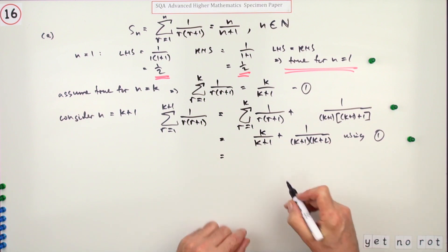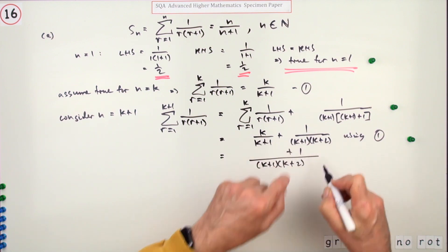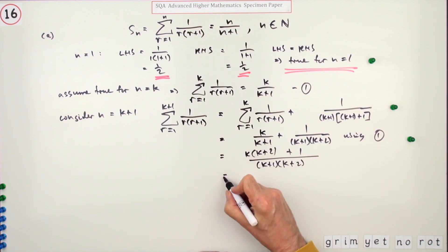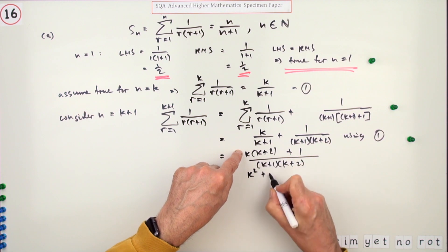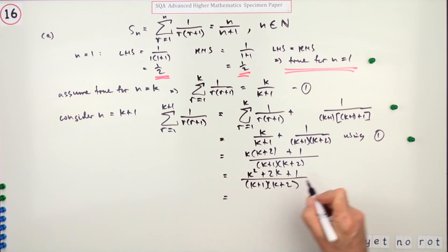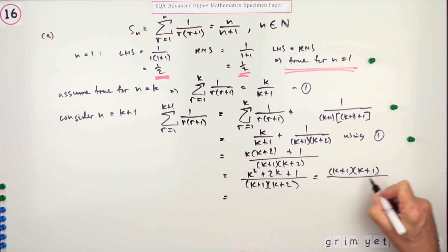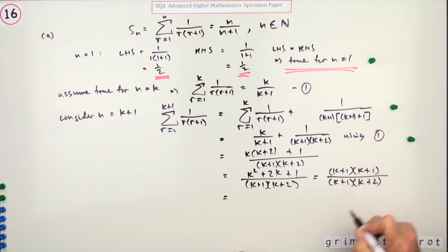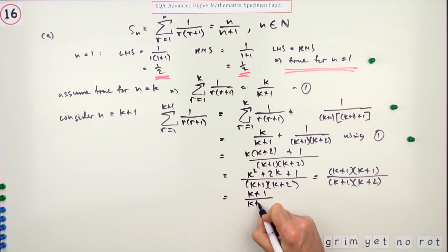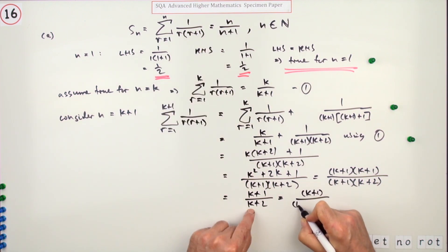The next mark doesn't come until you've tied it up. You've got two fractions to add: k over k+1 already has part of the denominator, so the second fraction needs multiplying to give k(k+1) over (k+1)(k+2) plus 1 over (k+1)(k+2). Multiplying out gives k² + 2k + 1 over (k+1)(k+2). That numerator factorises as (k+1)², so the (k+1) cancels, leaving k+1 over k+2.